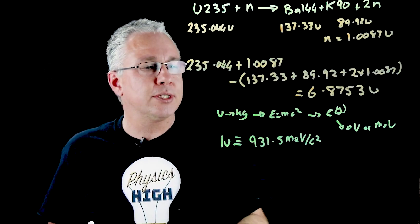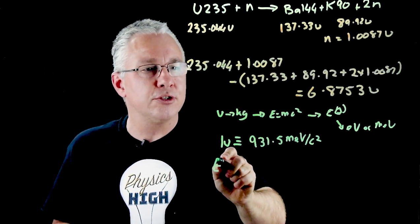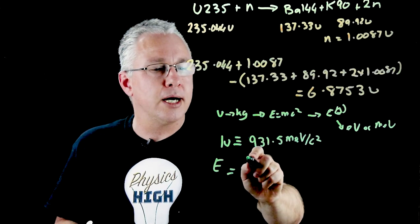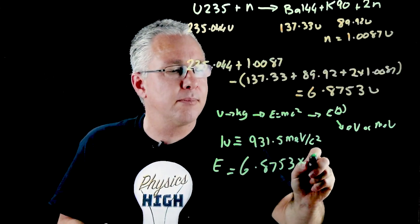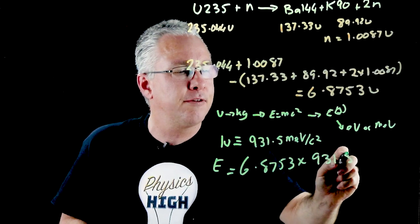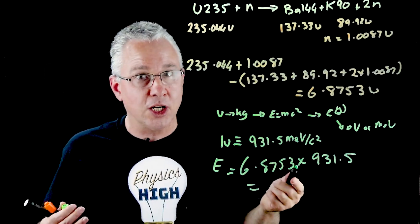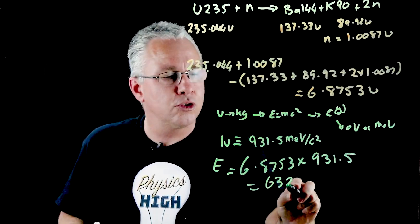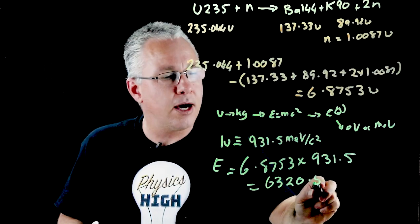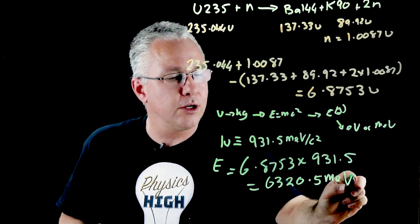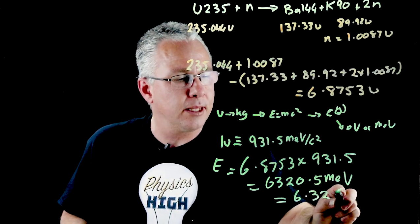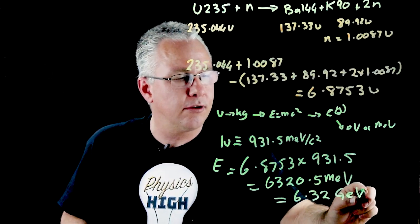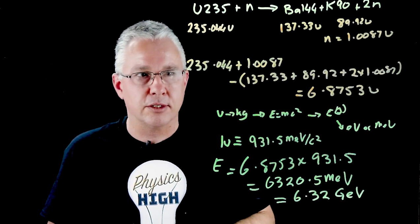Since 1u equals that, the energy we're interested in is equal to my 6.8753 multiplied by my 931.5, and I get a grand total of 6320.5 mega electron volts, or you could say 6.32 giga electron volts because we've got another thousand there.